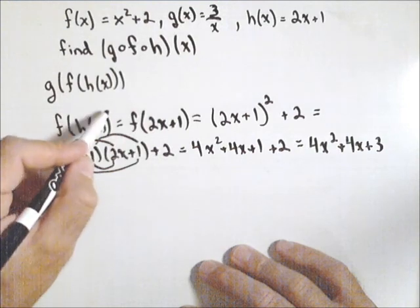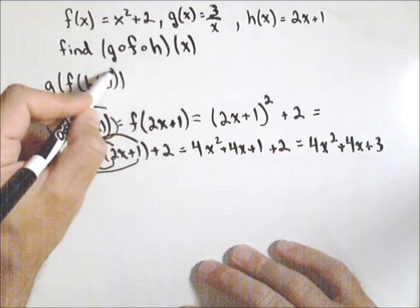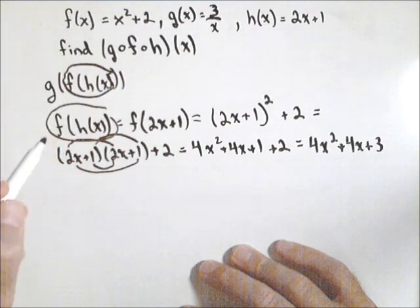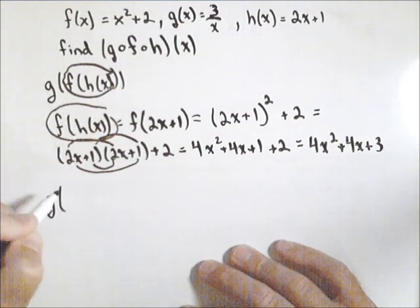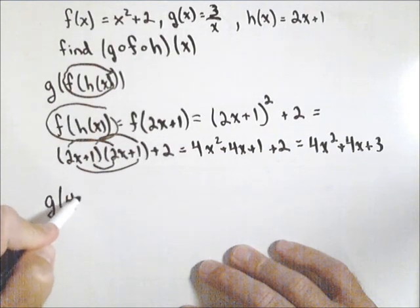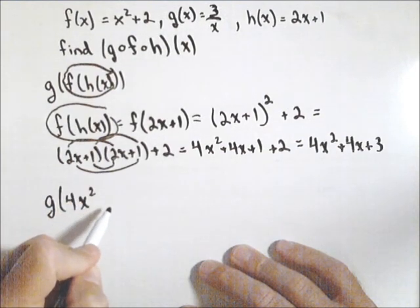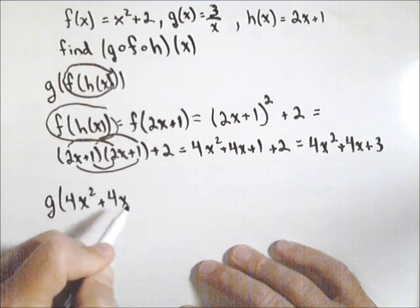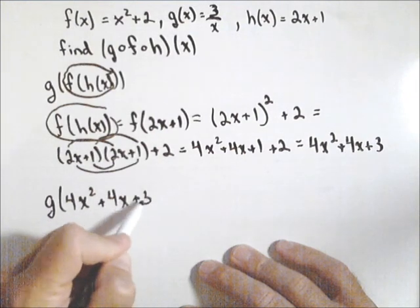Now this is what's going into g for our triple composition. So what I'm actually looking for when I'm looking for g of f of x is g of four x squared plus four x plus three.